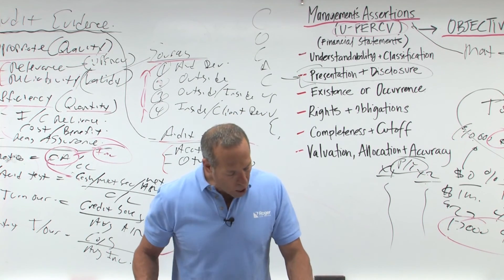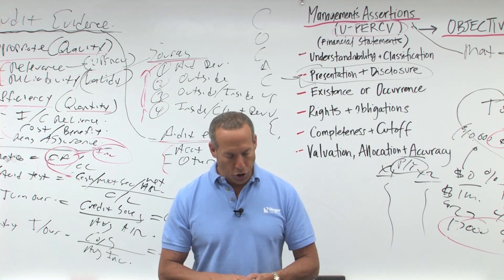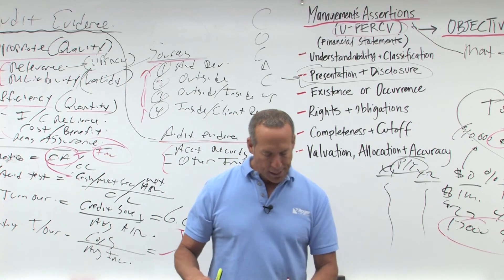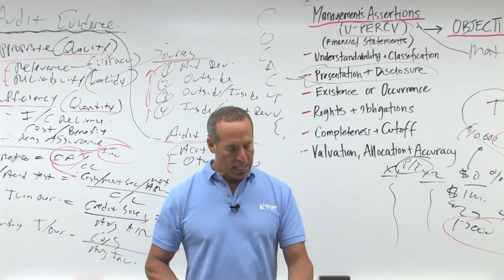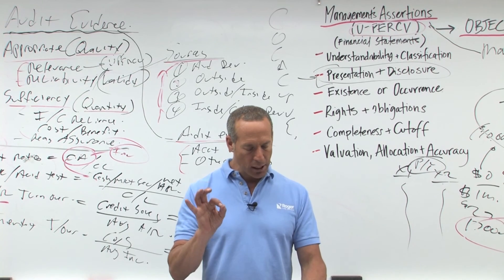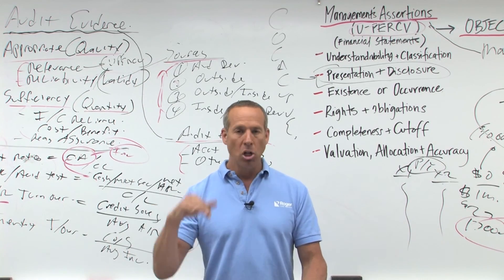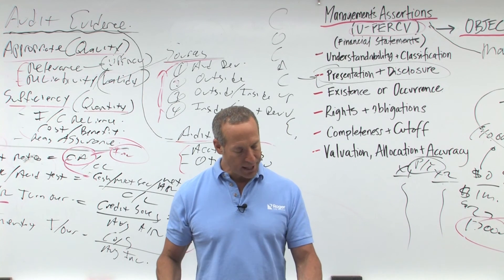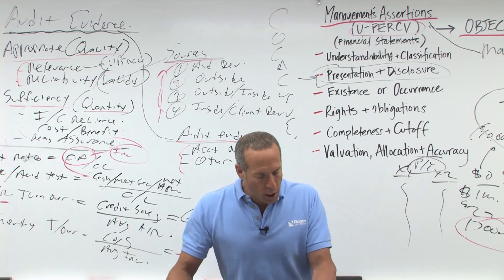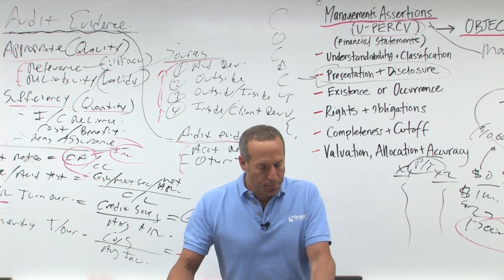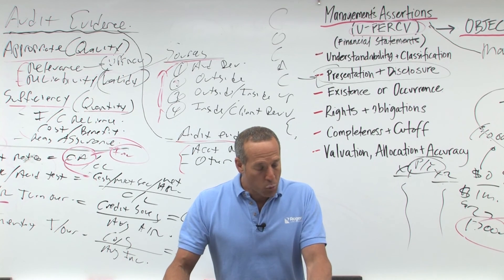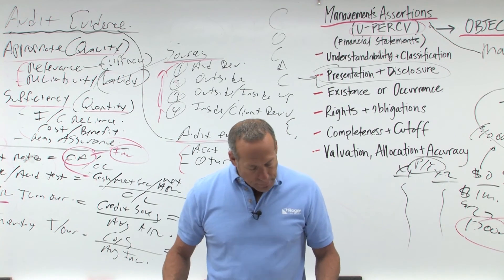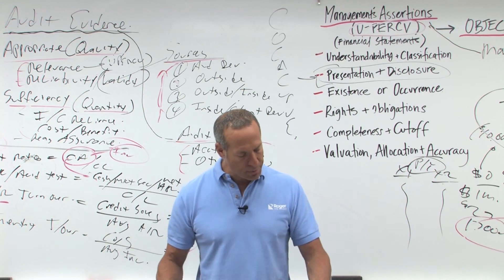Profitability ratios — profit margin on sales, also called your gross margin, is net income over net sales, and measures net income generated by each dollar of sales. Rate of return on assets measures overall profitability.